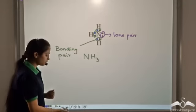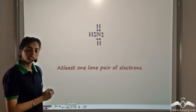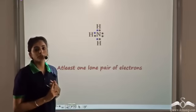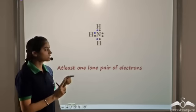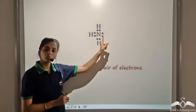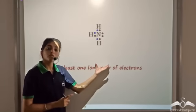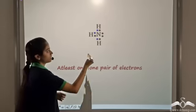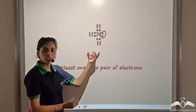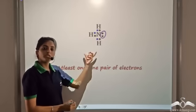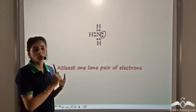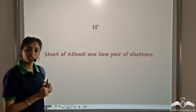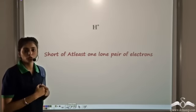Now we will look at a type of compound formation in which we need a species which has at least one lone pair of electrons. In this case, ammonia has one lone pair of electrons, so this is one of the species required. Another species that we need is something which is short of one lone pair of electrons.